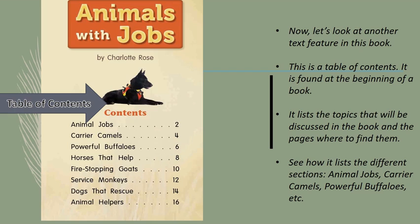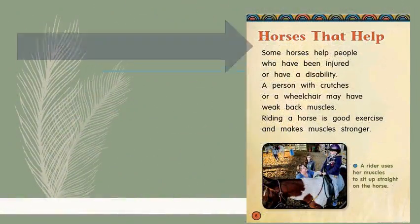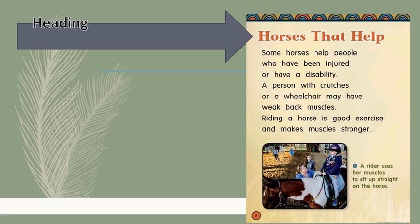Table of contents: this is a table of contents. It is found at the beginning of the book. It lists the topics that will be discussed in the book and the pages where to find them. See how it lists the different sections: Animal Jobs, Courier Camels, Powerful Buffaloes, etc.